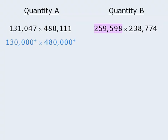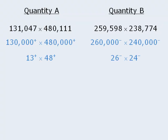In quantity B, this number is a little bit smaller than 260,000. And this number is a little bit smaller than 240,000. So we'll write this. From here, we can see that all four numbers end with four zeros. So let's just drop those zeros and compare these simpler values.